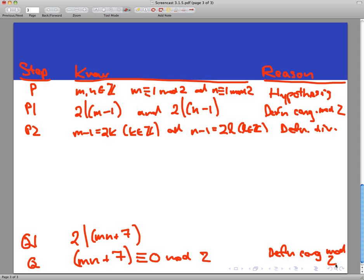Maybe we can make a second backwards step here because if 2 divides MN plus 7, then what that would mean is that MN plus 7 is equal to 2Q for some Q in the integers. That would be correct to say that. So line Q1 would follow from Q2. If I can only get to Q2, Q1 will follow by definition of divisibility.